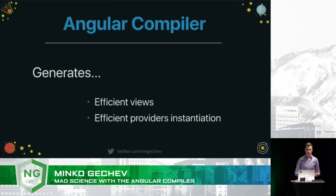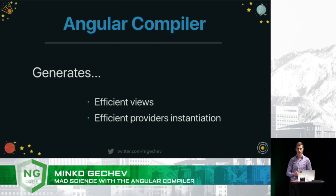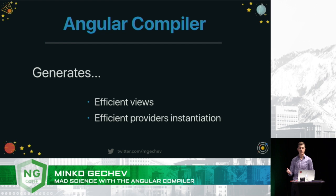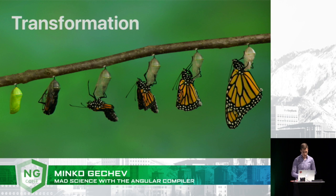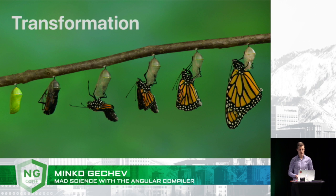In short, the compiler is going to generate more efficient views and also more efficient provider instantiation. The individual providers are going to be instantiated in the most efficient manner just by inlining their dependencies inside of their factories or constructors. In one word, this is a transformation of our application.